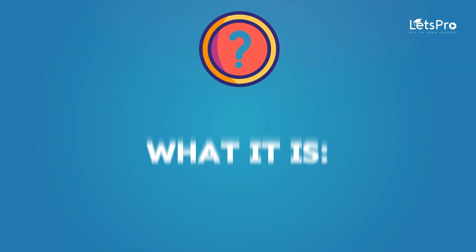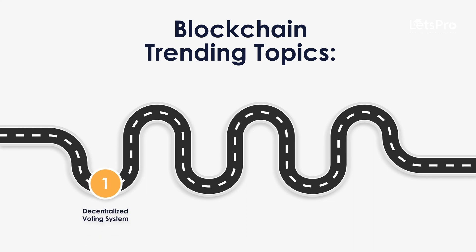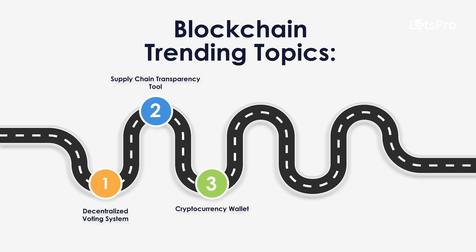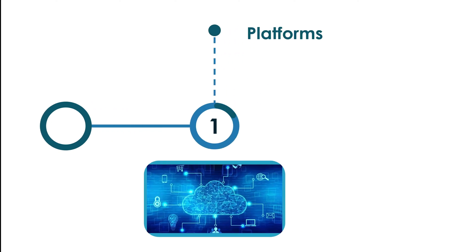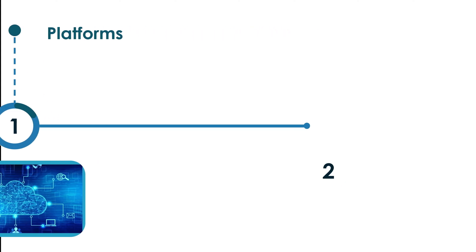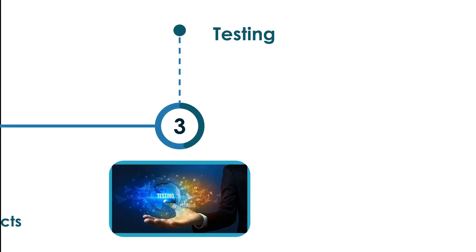Domain 10: Blockchain. Blockchain is a decentralized ledger system that ensures secure and transparent transactions. Trending topics include: a Decentralized Voting System secured by blockchain; a Supply Chain Transparency Tool to track goods; a Cryptocurrency Wallet to manage digital currencies; Blockchain-based e-health records for secure medical data sharing; and an NFT Marketplace to buy, sell and trade digital assets. Use Ethereum or Hyperledger for development, write smart contracts in Solidity, and simulate transactions on blockchain test networks.